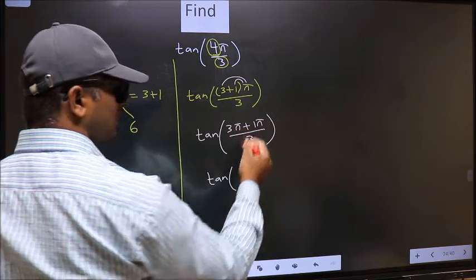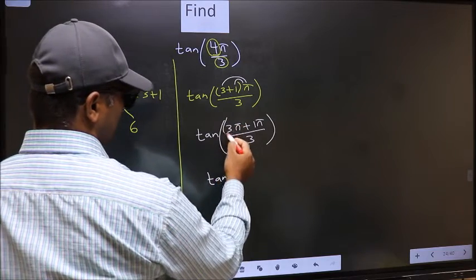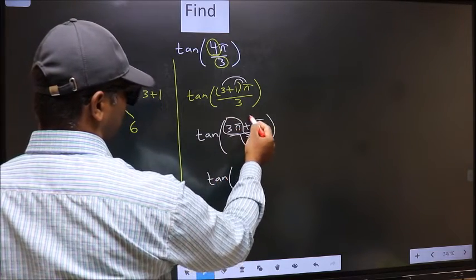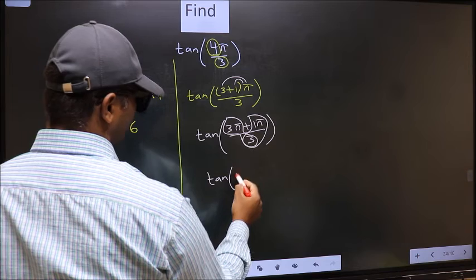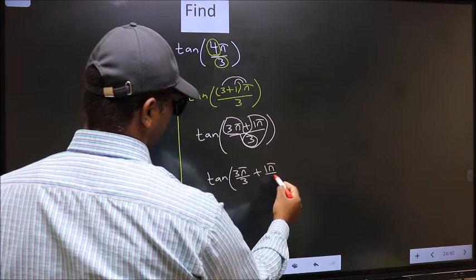Now tan. Here we should split the denominator in this way: 3π/3 plus 1π/3.